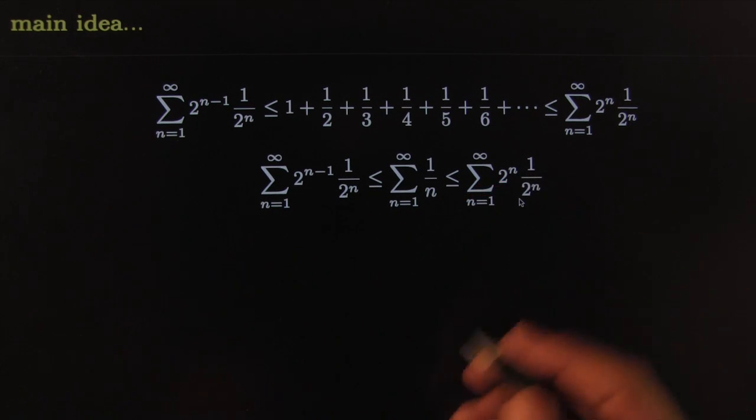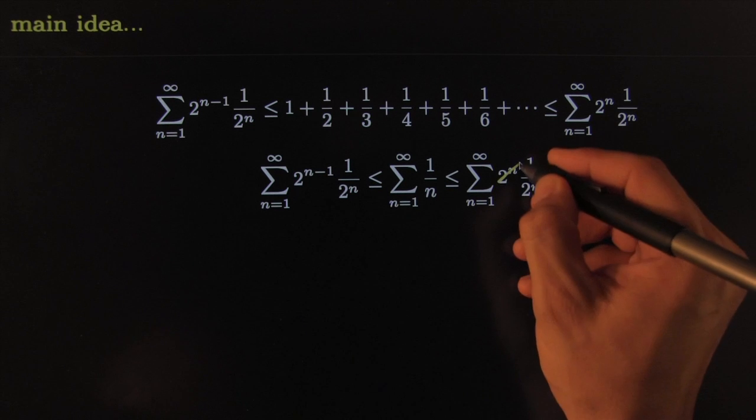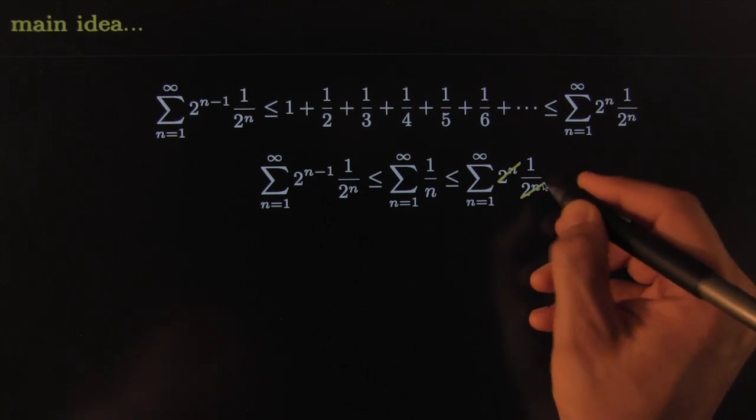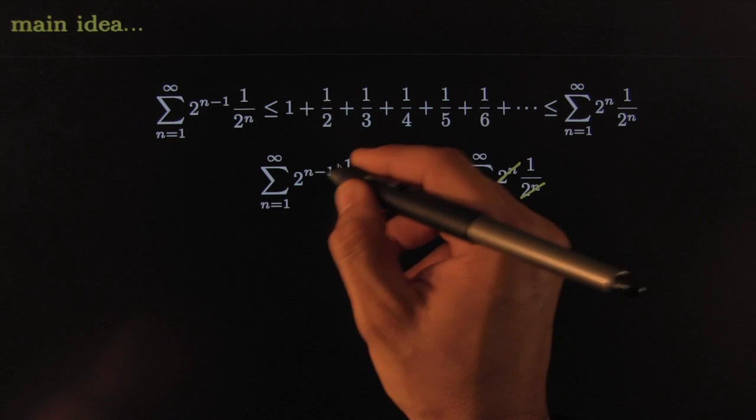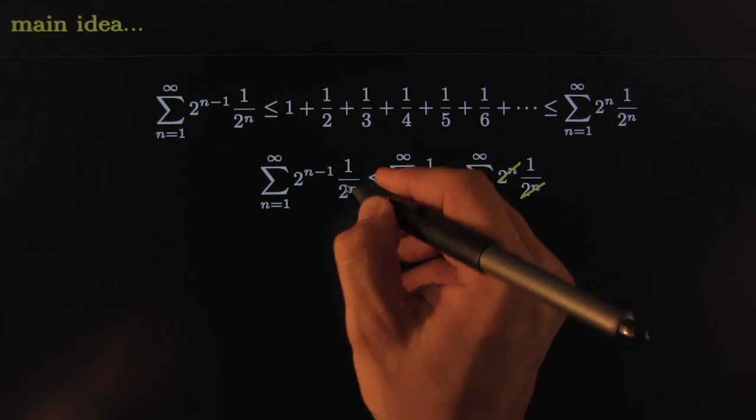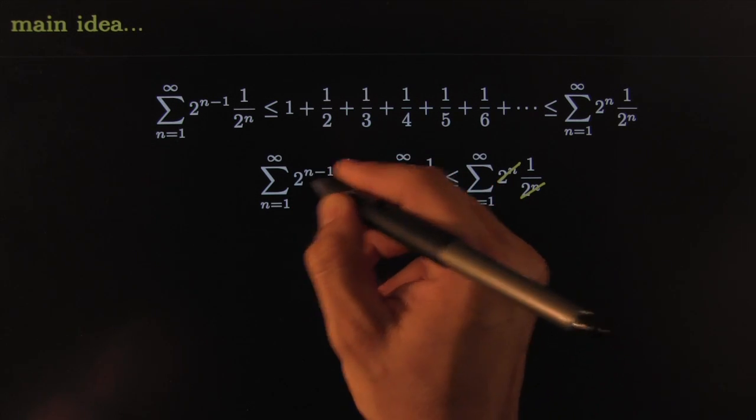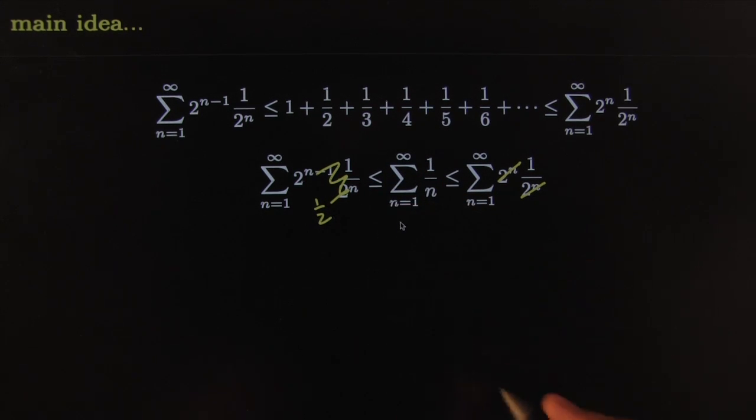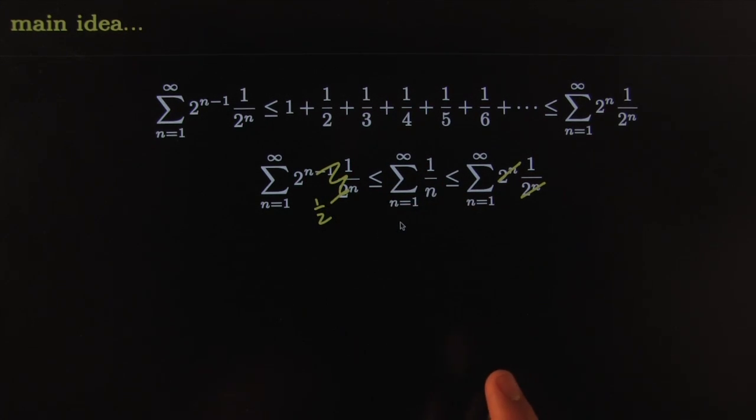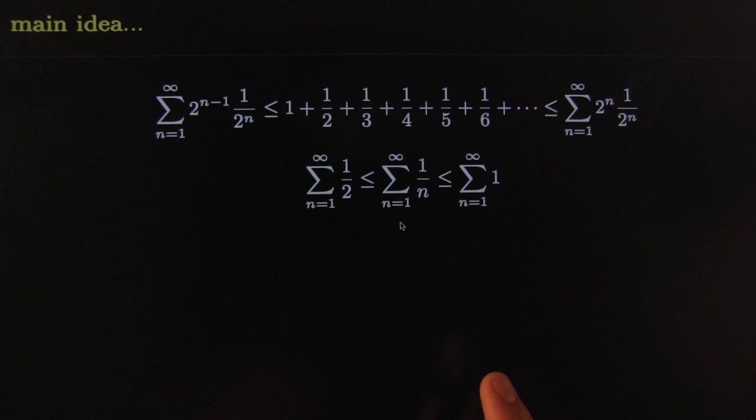This would cancel with that, and that would cancel with that, and this would also almost cancel too, except for one half maybe. n of them would cancel, then you'd get something like one half. So you could simplify. It might be tempting to say that's equal to that, and that does some nice things for you.